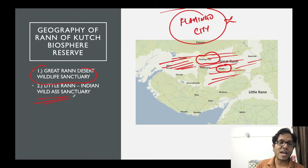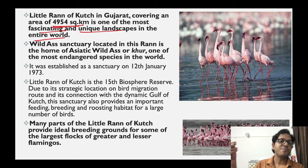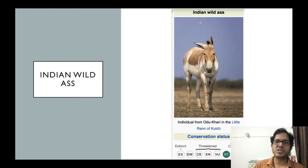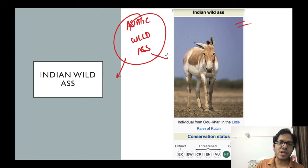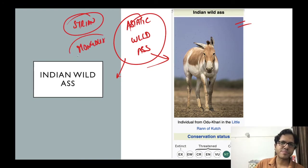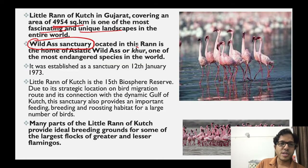In Little Run of Kutch, there is Indian Wild Ass Sanctuary. Little Run of Kutch covers an area of 4,954 square kilometers - one of the most fascinating and unique landscapes in the entire world. The Indian Wild Ass is found here. It is a subtype of Asiatic Wild Ass. The Asiatic Wild Ass is of various types: Indian Wild Ass, Syrian Wild Ass, and Mongolian Wild Ass. It is also known as 'Khour'. This is one of the most endangered species in the world.